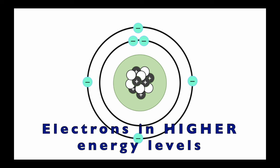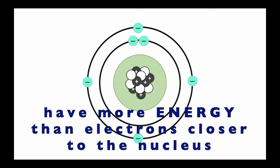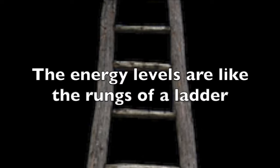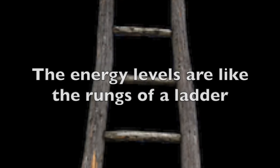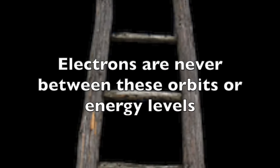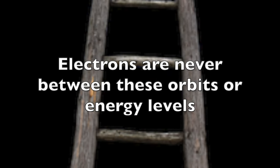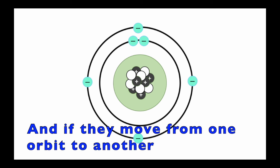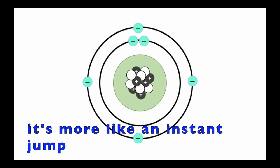Electrons in higher energy levels have more energy than electrons closer to the nucleus. The energy levels are like the rungs of a ladder. Electrons are never between these orbits or energy levels. And if they move from one orbit to another, it's more like an instant jump.